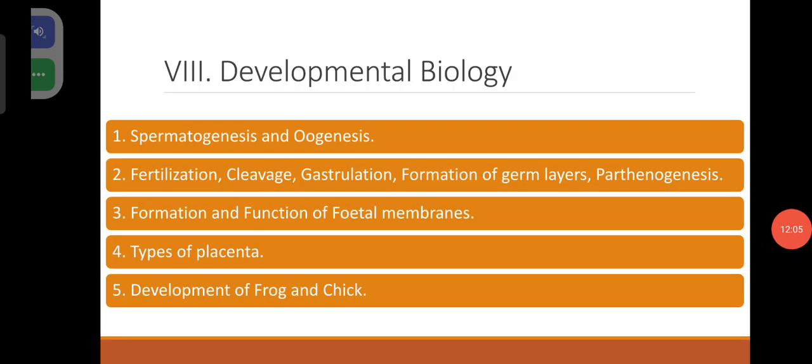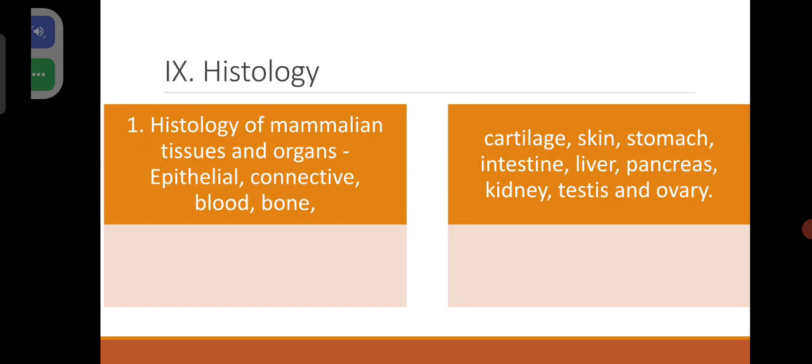Developmental biology: spermatogenesis and oogenesis, fertilization, cleavage, gastrulation, formation of germinal layers, parthenogenesis, formation and function of fetal membranes, types of placenta, development of frog and chick. Coming to histology: histology of mammalian tissues and organs — how many types of epithelial tissues are there and where they are found, connective tissue, blood, bone, cartilage, skin, stomach, intestine, liver, pancreas, kidney, testes and ovary.